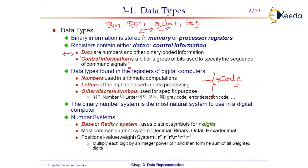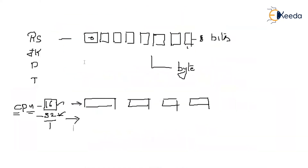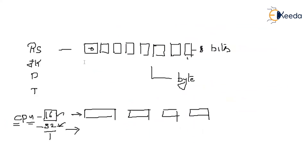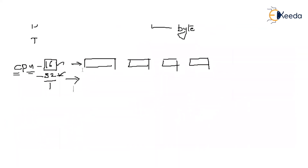The binary number system is the most natural system to use in a digital computer. Any number system you deal with will have a base or radix. Let us understand what base or radix means.